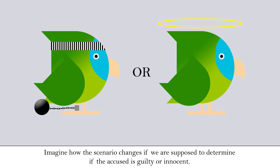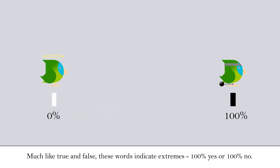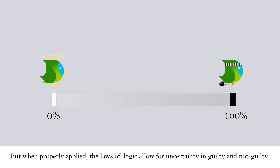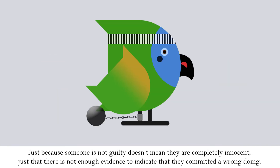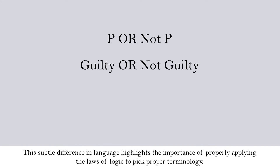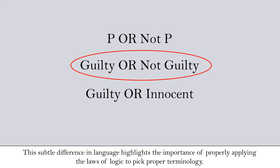Imagine how the scenario changes if we are supposed to determine if the accused is guilty or innocent. Much like true and false, these words indicate extremes — 100% yes or 100% no. But when properly applied, the laws of logic allow for uncertainty in guilty and not guilty. Just because someone is not guilty doesn't mean they are completely innocent, just that there is not enough evidence to indicate that they committed a wrongdoing. This subtle difference in language highlights the importance of properly applying the laws of logic to pick proper terminology.